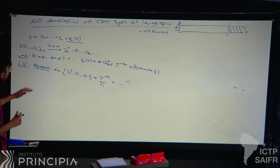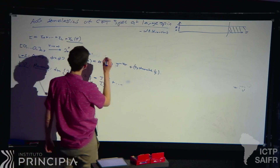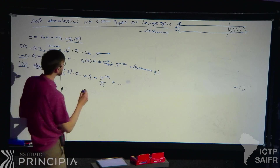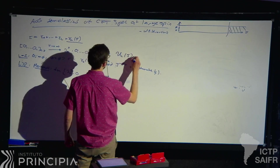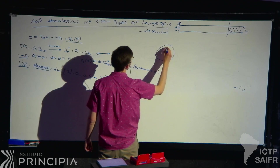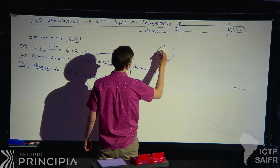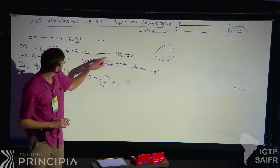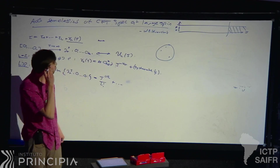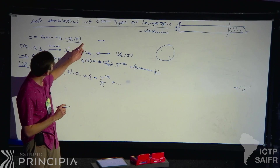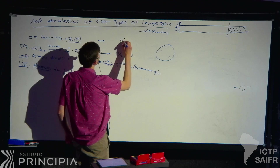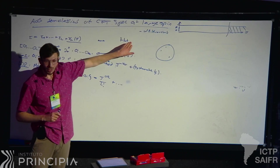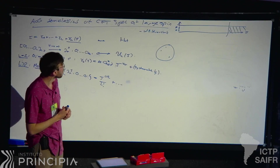One way to see this degeneracy is in an ADS picture, where these multi-twist operators form a Hilbert space that can be realized in ADS as multi-particle states — represented by particles on the Poincaré disk. This is a one-to-one correspondence between free-field theory operators and multi-particle states of a free field in ADS. Adding in the anomalous dimension is like adding an interaction Hamiltonian, so you can see this as an L-body problem in ADS.